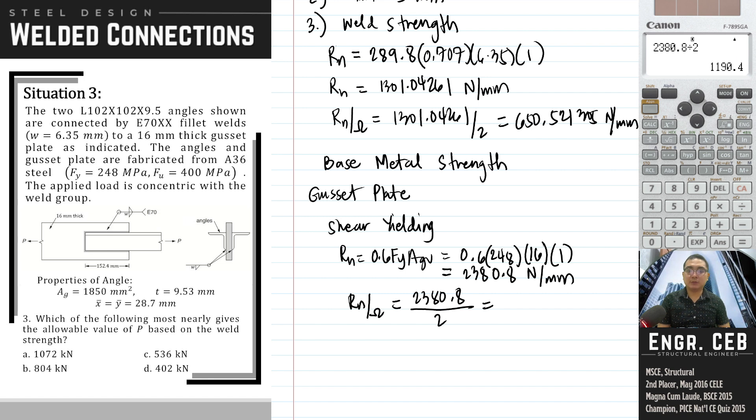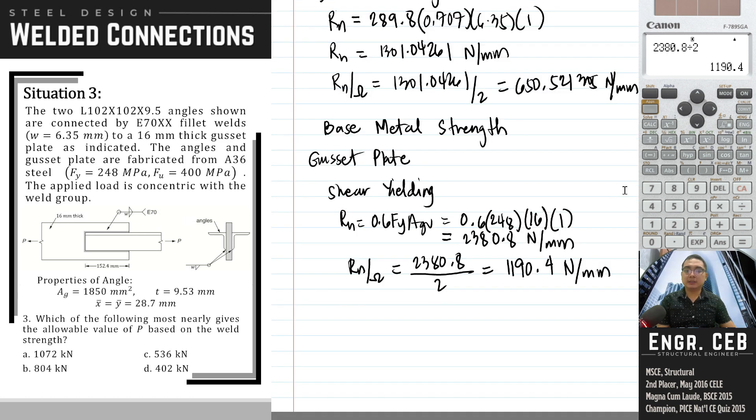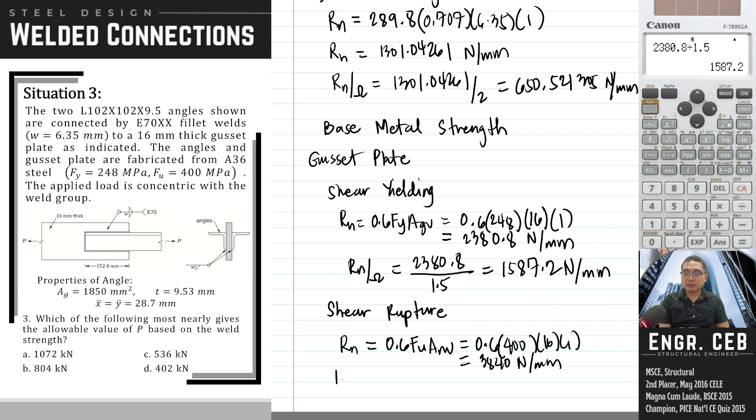Shear rupture: Rn equals 0.6 Fu Anv, 0.6 times 400 times 16 times 1, so this is 3840 N/mm. We have a correction - 1.5 is the factor of safety for shear yielding. To get allowable strength for shear rupture, we divide by the factor of safety, 3840 divided by 2, that is 1920 N/mm.